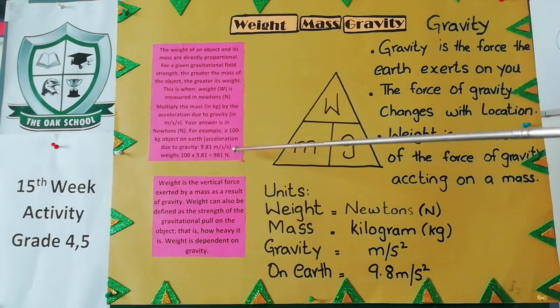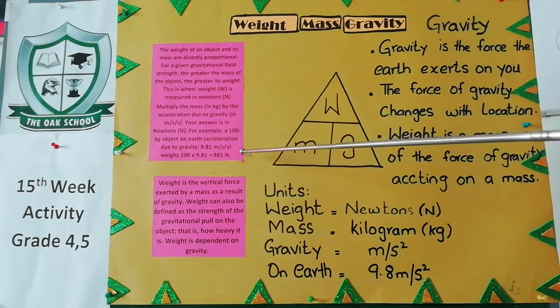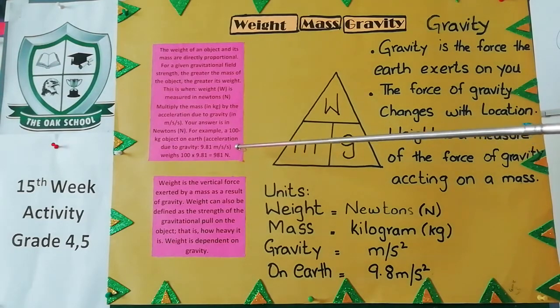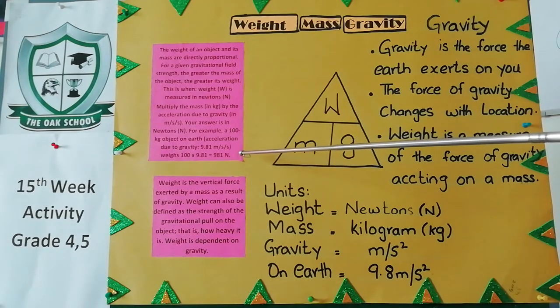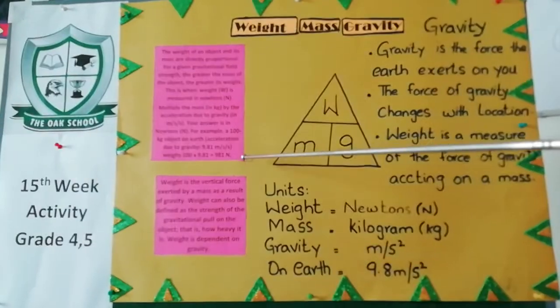For example, a 100 kg object on Earth, where acceleration due to gravity equals 9.81 m/s². Weight equals 100 times 9.81, which equals 981 Newtons.